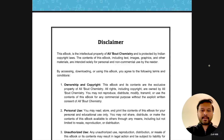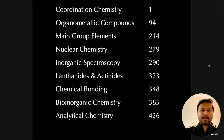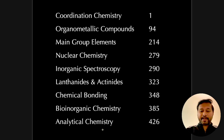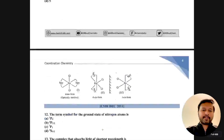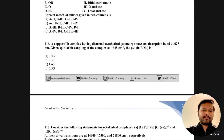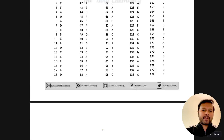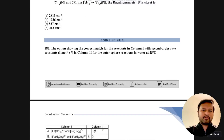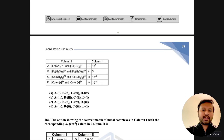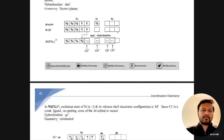For inorganic chemistry, the front page and disclaimer are the same, but the contents are different. We have: coordination chemistry, organometallic chemistry, main group elements, nuclear chemistry, inorganic spectroscopy, lanthanides and actinides (f-block elements), chemical bonding, bioinorganic chemistry, and analytical chemistry. In the inorganic ebook, questions come first, then the answer key, then the detailed solution.